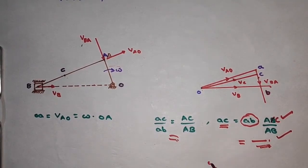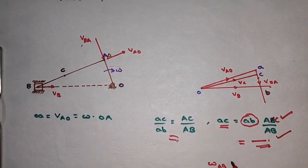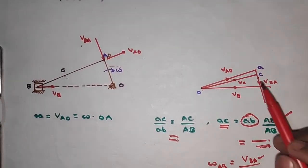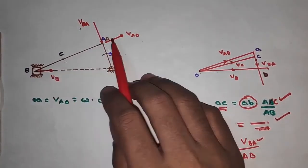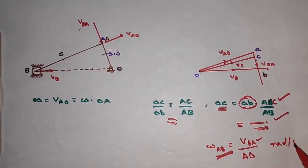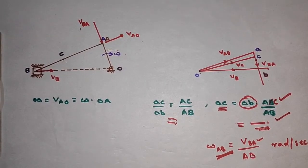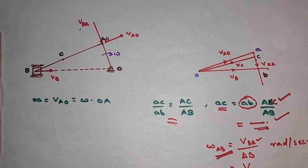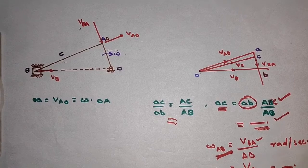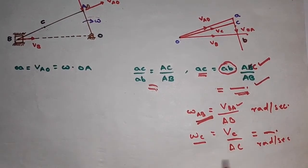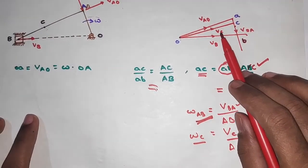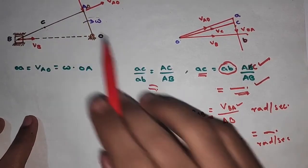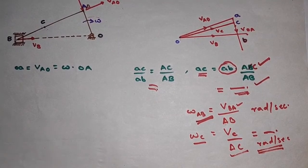To determine the angular velocity of the connecting rod, omega AB equals VBA divided by the length AB. VBA is obtained from the velocity triangle, and AB is measured from the mechanism diagram using the scale, giving the result in radians per second. Similarly, the angular velocity of any point, such as omega C, equals VC divided by AC, where VC is read from the velocity triangle and AC is the link length, giving omega C in radians per second.